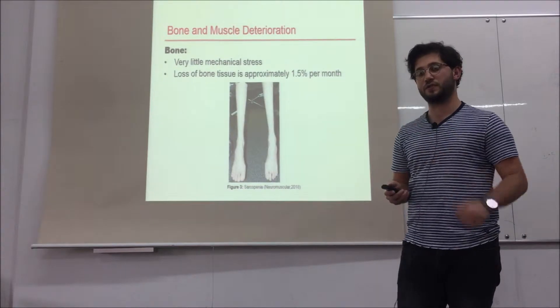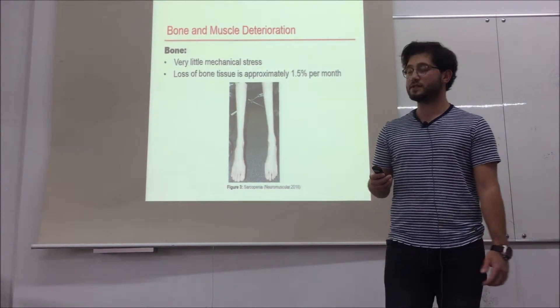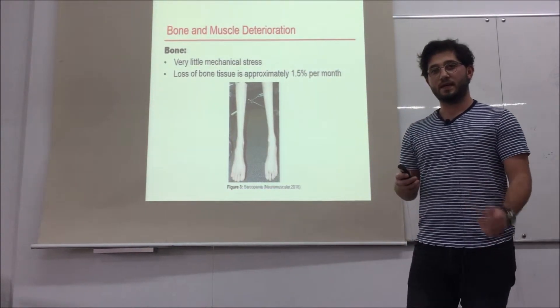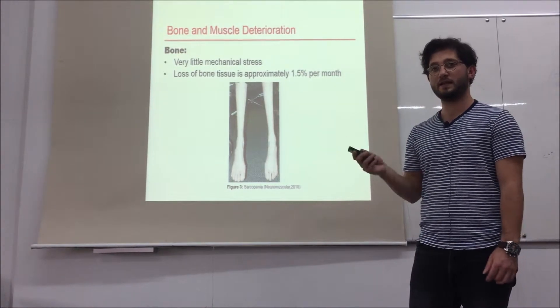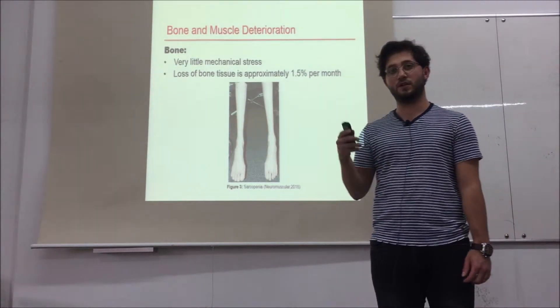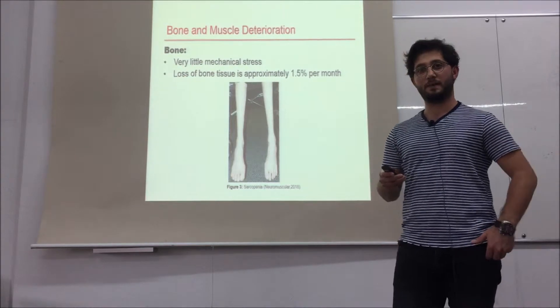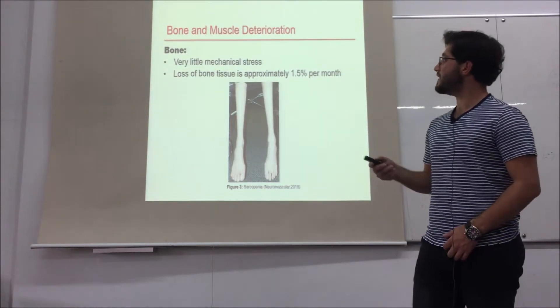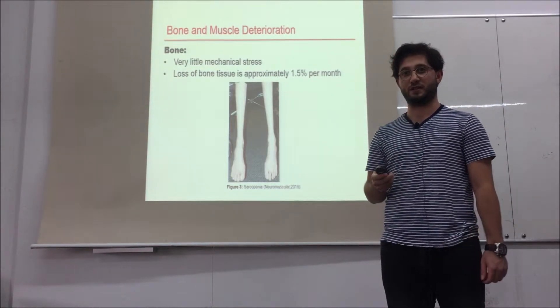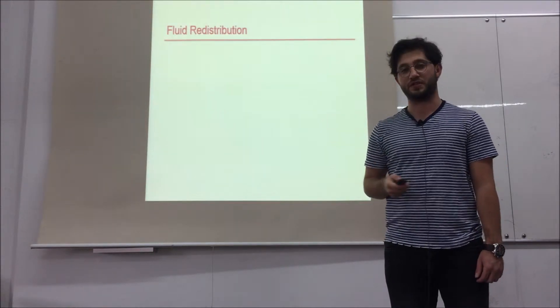According to a research of NASA, loss of bone tissue is approximately 1.5% per month, especially from the lower vertebrae, hips and femur. Now that we have seen bone and muscle deterioration, let me move on to fluid redistribution.